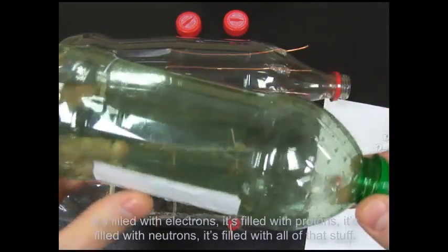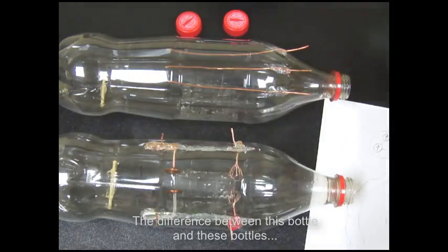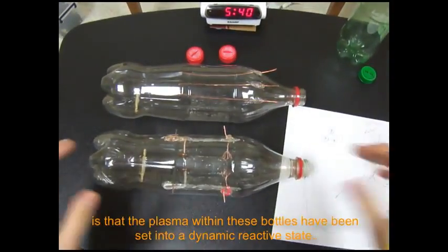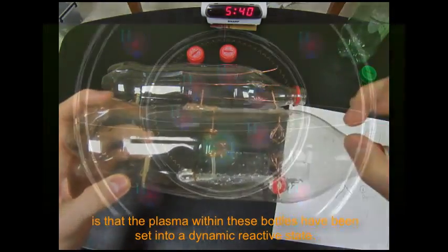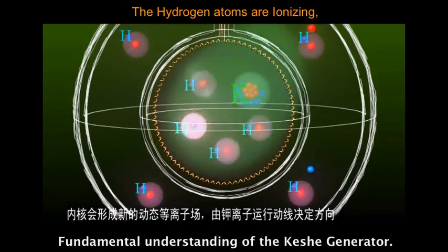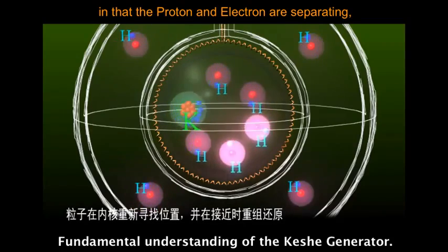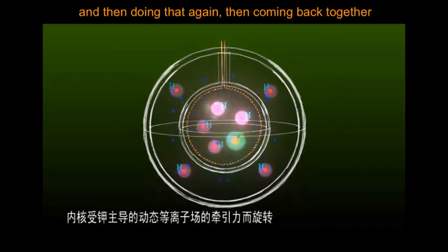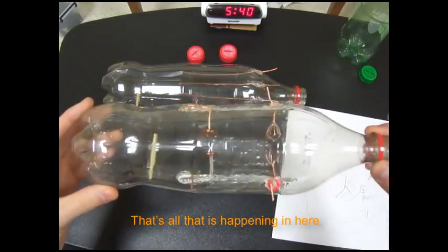So it's filled with electrons, it's filled with protons, it's filled with neutrons, it's filled with all of that stuff. The difference between this bottle and these bottles is that the plasma within these bottles has been set into a dynamic reactive state in that the hydrogen atoms are ionizing, the proton and the electron are separating, circulating around and then coming back together and then doing that again. That's all that's happening in here.